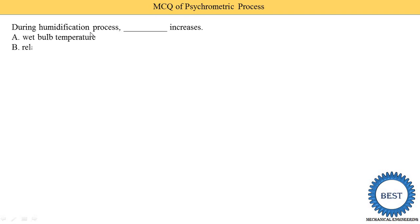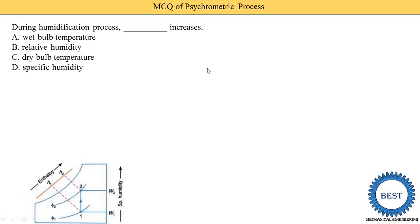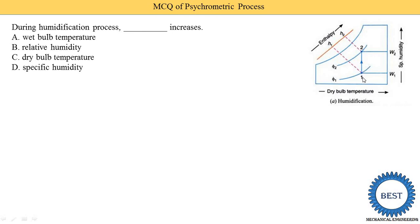During the humidification process, which parameter increases? Options: wet bulb temperature, relative humidity, dry bulb temperature, or specific humidity. On the psychrometric chart for humidification, dry bulb temperature remains constant — Td1 and Td2 are the same. Specific humidity increases from W1 to W2. Relative humidity also increases. Wet bulb temperature also increases. So three answers are correct: options A (wet bulb temperature), B (relative humidity), and D (specific humidity) are all correct, though some books only accept relative humidity.